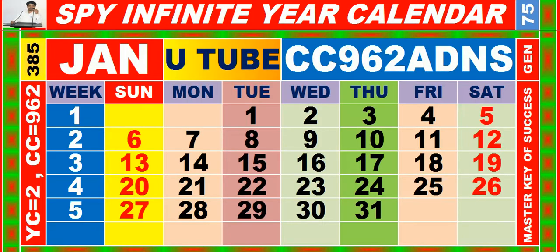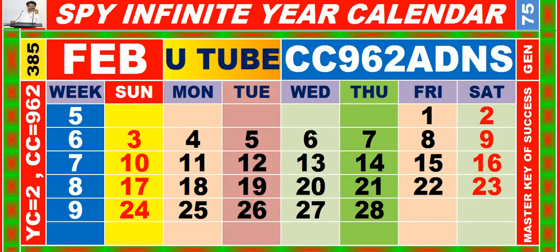Calendar for the month of January, having calendar code equal to 962. Calendar for the month of February, having calendar code equal to 962.